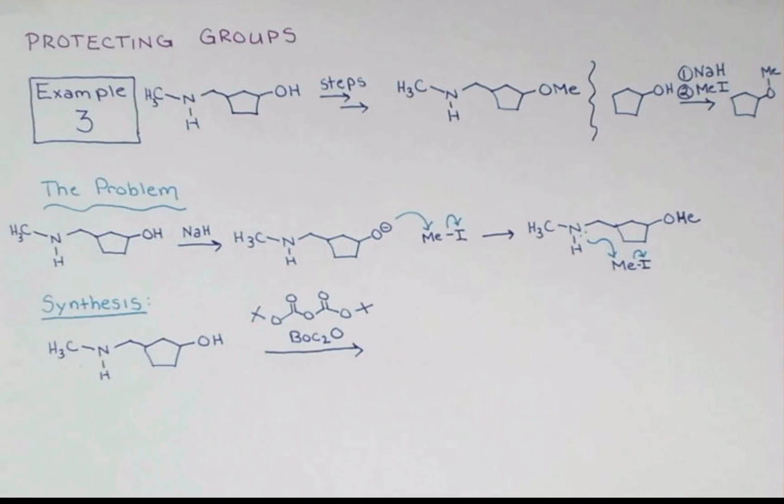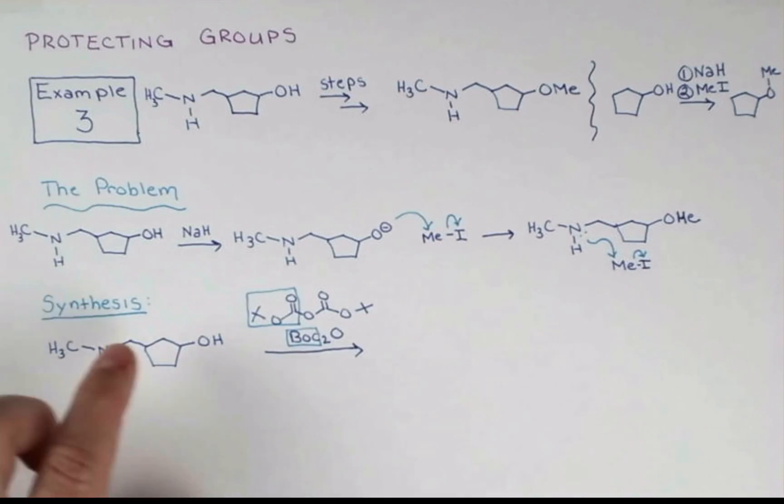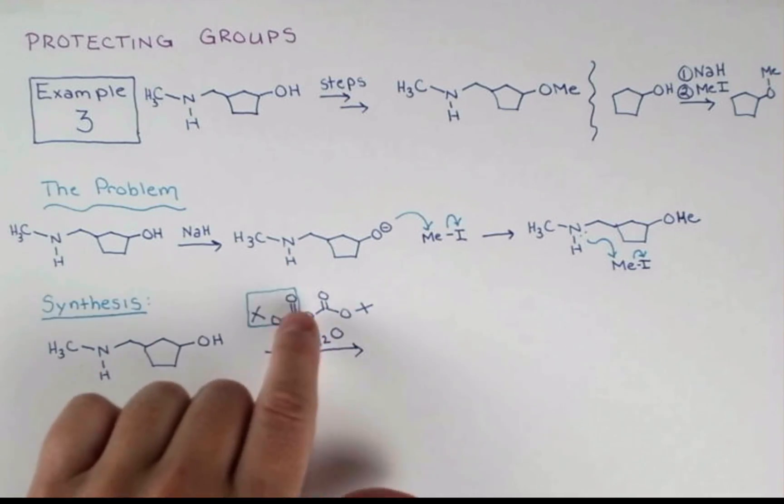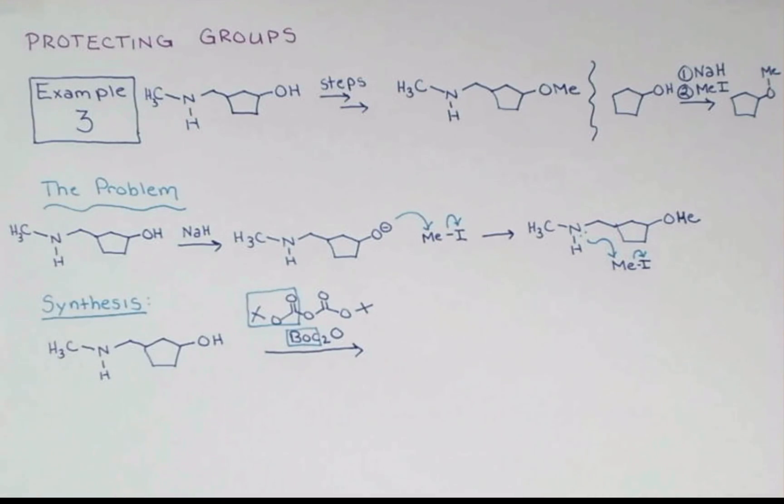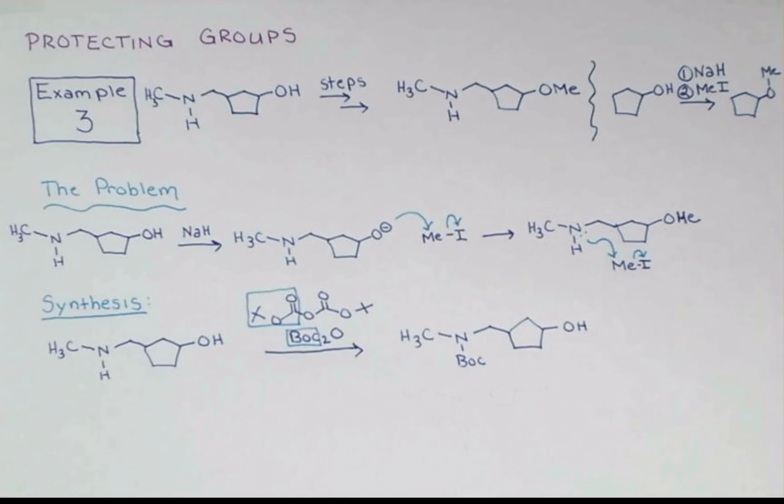So the Boc is representing this part of the molecule. So we have two of them and an oxygen in the middle. Nitrogen attacks here, forms a tetrahedral intermediate, we kick off the rest of the molecule, and we get this structure. Here it is with our abbreviation, and let me draw it out below.